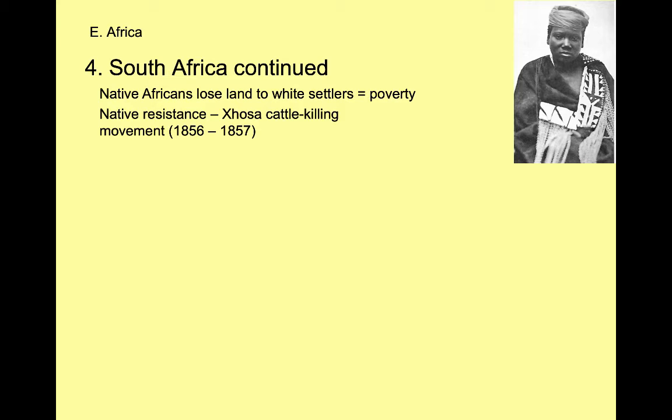One form of native resistance is the Xhosa cattle killing movement. It starts with a teenage girl who said she had a vision: to get the Europeans out, they needed to trust in their ancestors and gods. She said they needed to kill all of their cattle to put themselves completely at the mercy of their gods and ancestors. People followed her beliefs, mass cattle killing occurred, and as a result, mass starvation happened — the tribal population dropped from about 105,000 to 27,000 because of starvation.